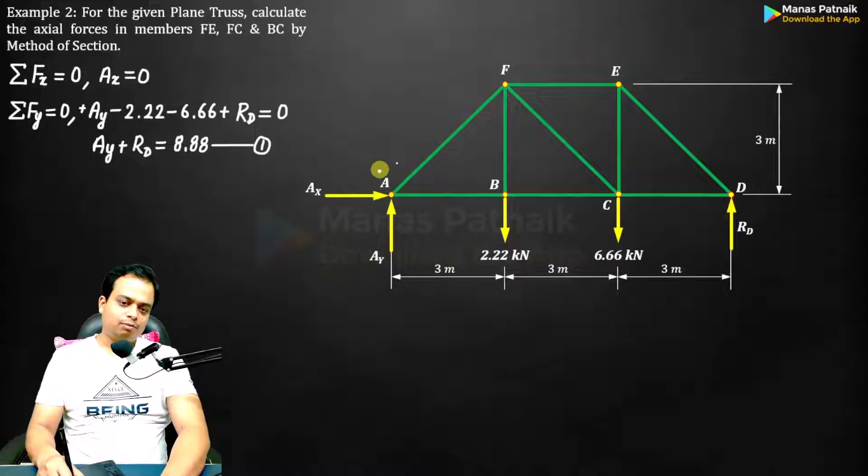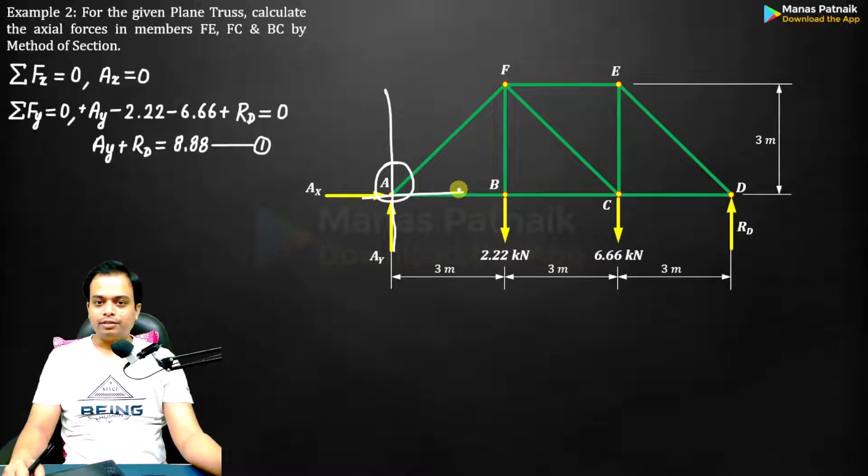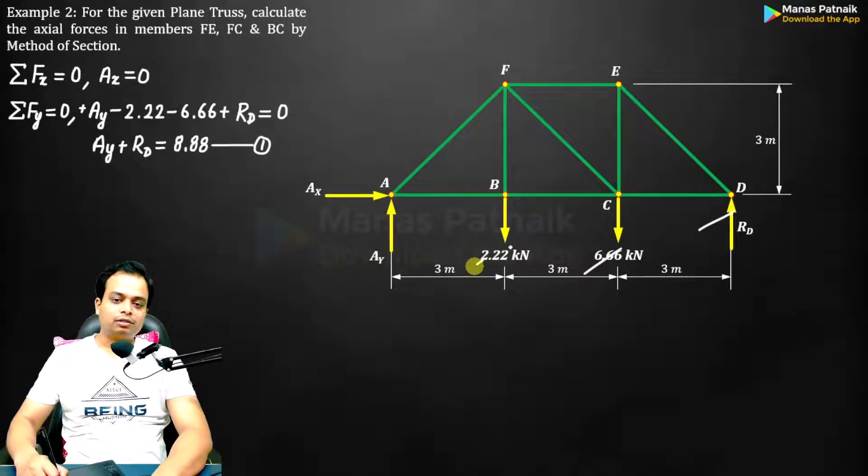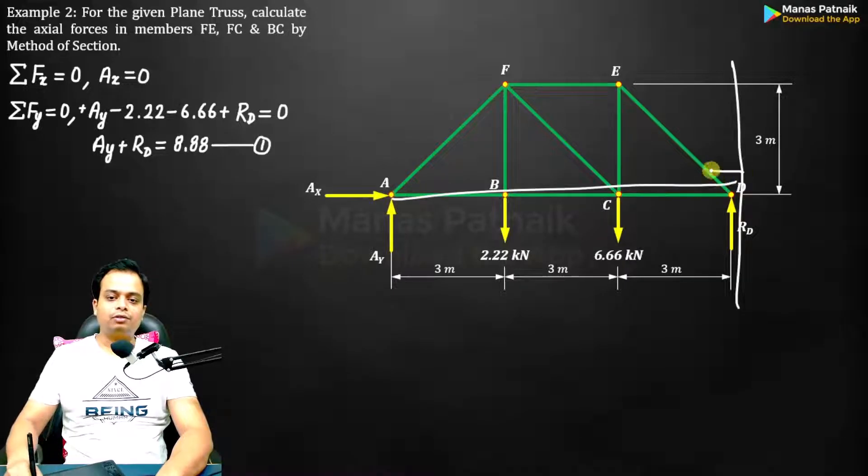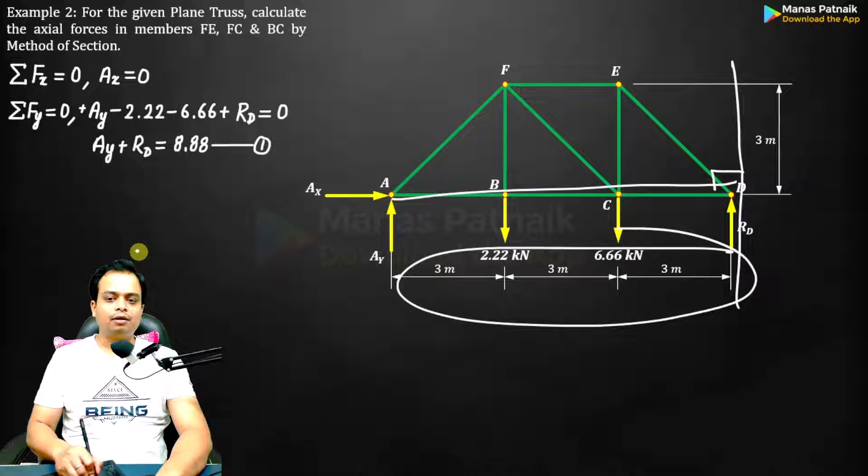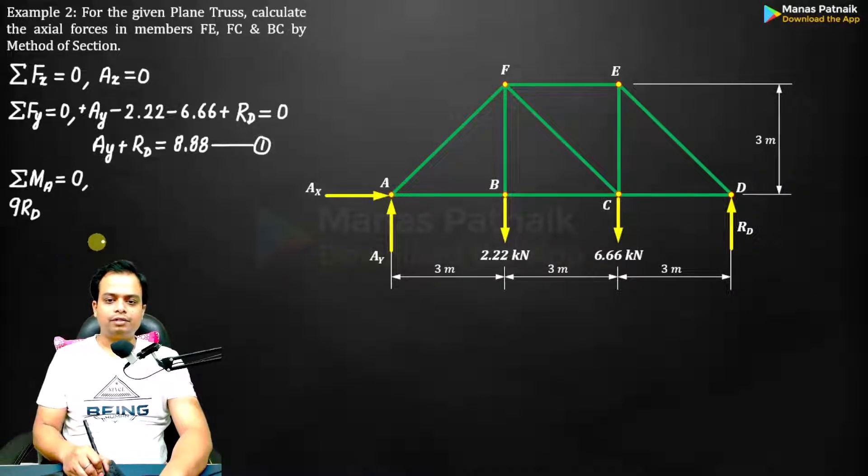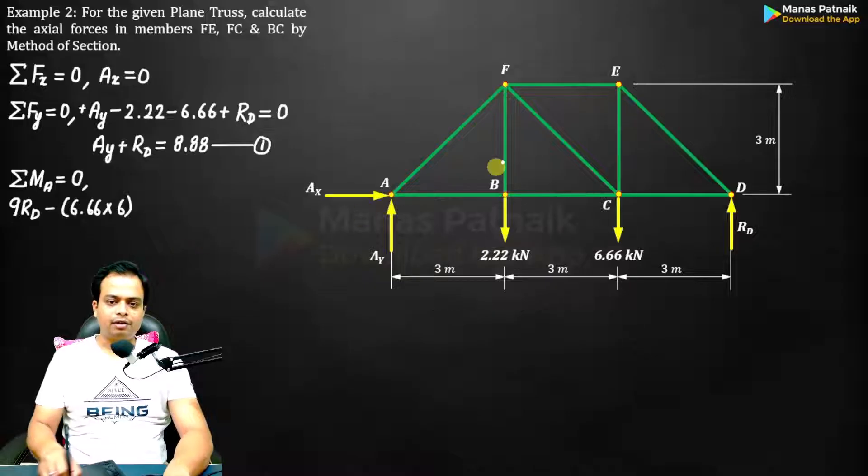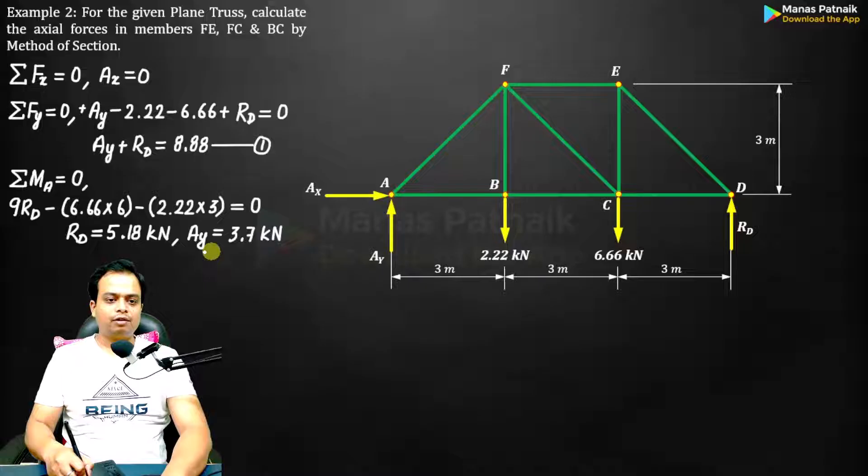Go for moment=0. Let's take the moment about point A. When you do that, automatically AY and AX will be out of the picture. You are basically left with these three forces. So RD multiplied by the perpendicular drop from A, that's 6, clockwise that's negative. Then 2.22 into 3, clockwise again negative, and equate it to 0. Solve it. You will get RD.